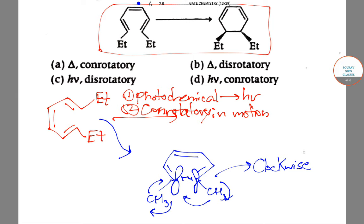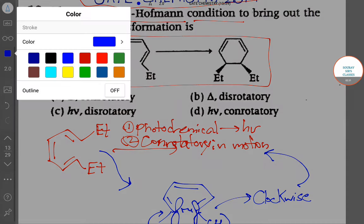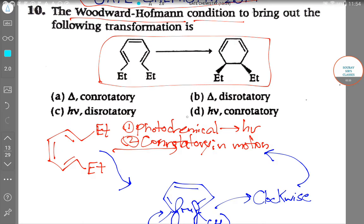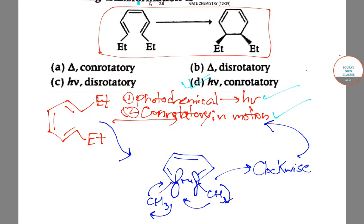Hence, it fulfills the condition of conrotary motion. So, looking at the options, we can see that the correct option for this question would be option D. It is a photochemical reaction with clockwise movement in its internal atoms where this is the intermediate step.